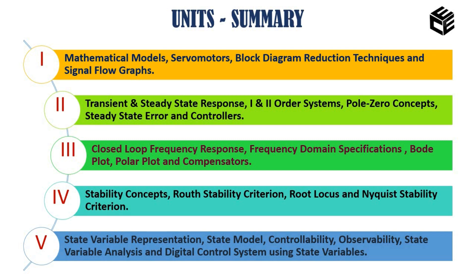Unit 5 completely deals with state variables — how we represent a system with the help of state variables, how to model a system, and how to calculate whether the system is controllable or observable. The difference between unit 1 and unit 5 is that in unit 1 you have single input and single output, but in unit 5 we completely learn about multiple input, multiple output. I assure you that all 5 units are very interesting, enthusiastic, and informative. I hope you will enjoy the upcoming sessions.